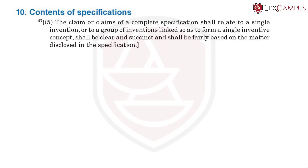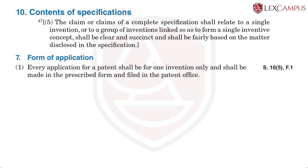Subsection 5 of Section 10 states that the claim or claims of a complete specification shall relate to a single invention. There is a cross-reference to Section 7, which tells us that an application can be only for a single invention or a group of inventions that are connected by what is called a single inventive concept — where there are a group of inventions but they together share the same concept.